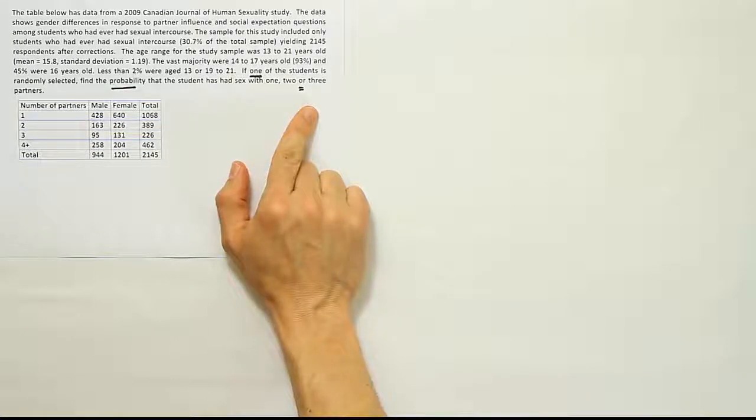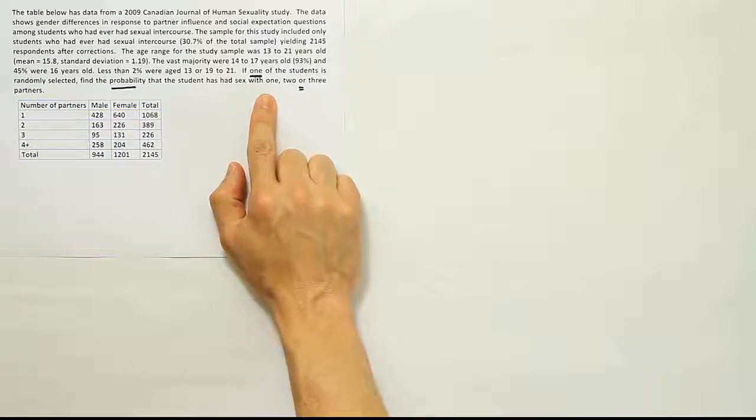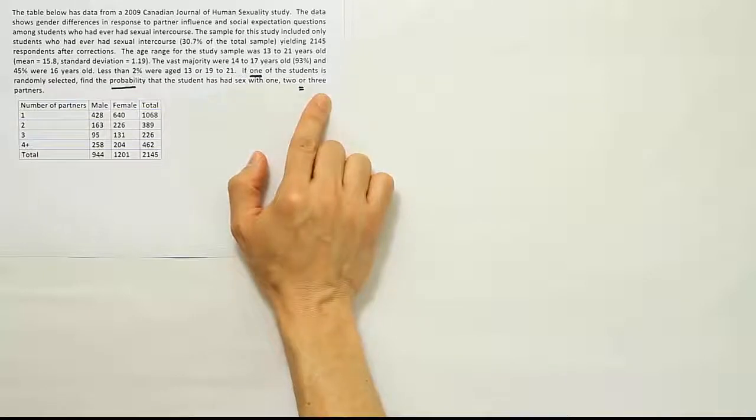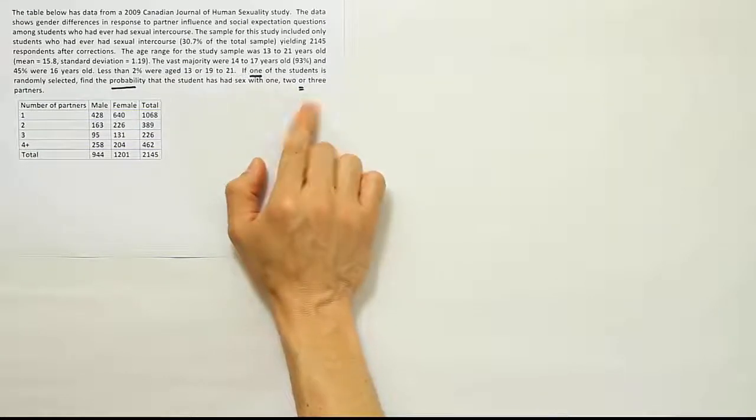Mutually exclusive means that they don't overlap. Because if they don't overlap, it's very easy. We just would add the probability that the person has had one partner to the probability that the person has two partners to the probability that the person has had three partners in the past.